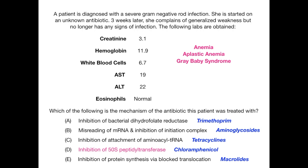Choice E is macrolides, with the mechanism of inhibition of protein synthesis via blocked translocation. Classic side effects are eosinophilia — but eosinophils are normal here — QTc prolongation, with no evidence of arrhythmia in the vignette, and cholestatic hepatitis, but the AST and ALT are normal. Nothing points to macrolides, so choice E is eliminated.